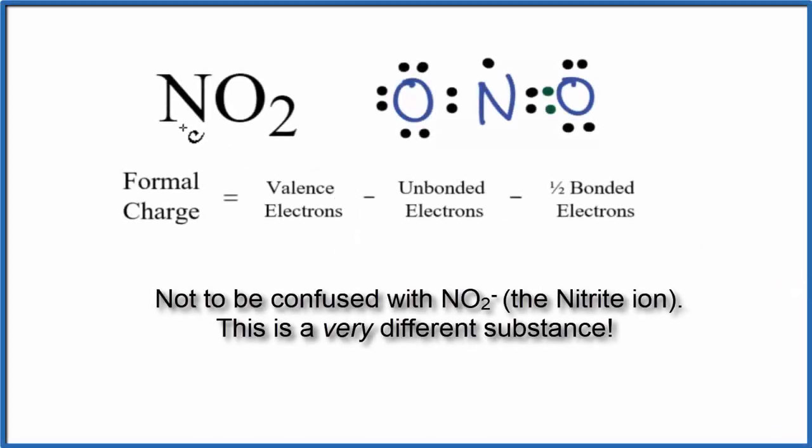To find the formal charges for each element in NO2, nitrogen dioxide, we use this Lewis structure and this formula here.